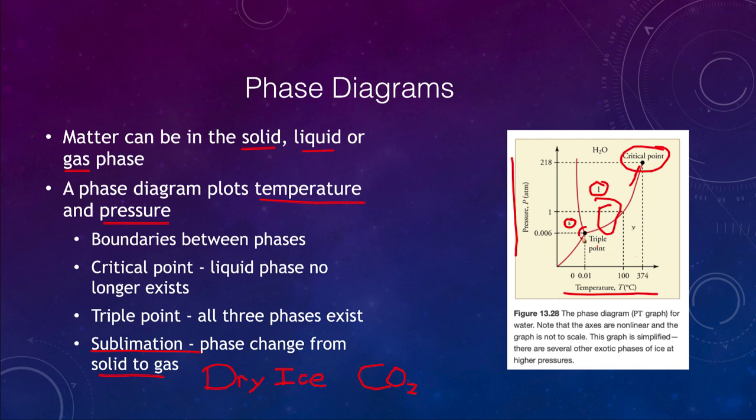If you go beyond the critical point, there's the triple point here, which is the one point where all three phases can exist simultaneously. At normal temperatures and pressures on earth, you can't get all three phases at once. You have to be at a very low temperature and pressure for water. But if you were at those two, then you could actually get water as a solid, a liquid, and a gas all at once. A phase diagram is a good way of summarizing and detailing all of that information in one diagram.